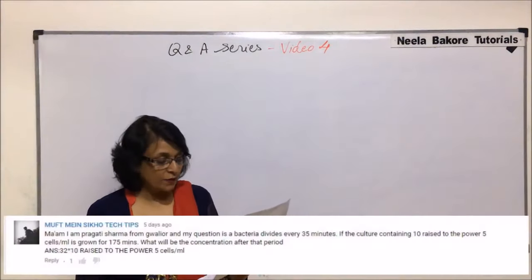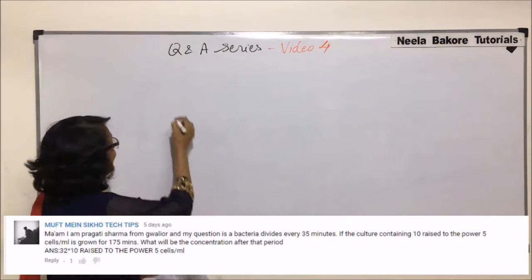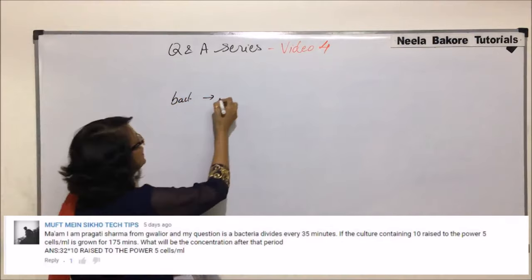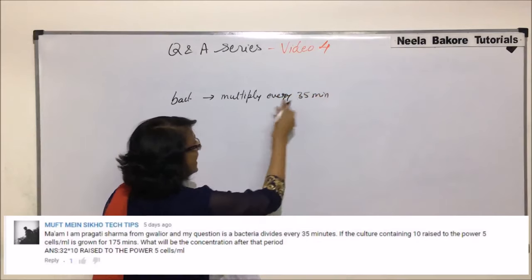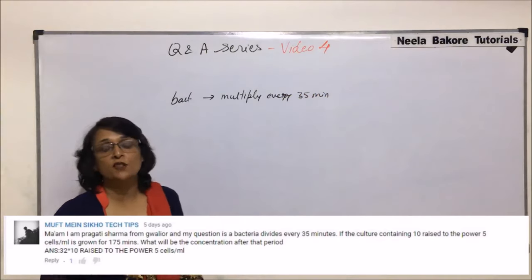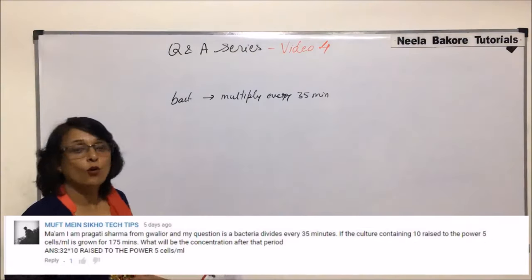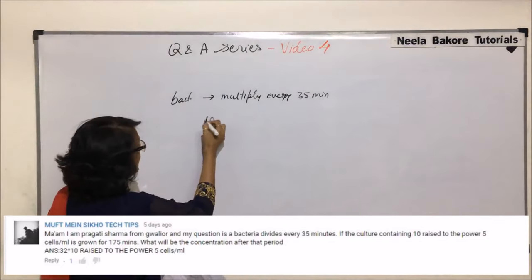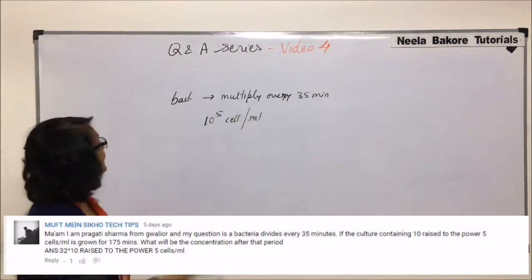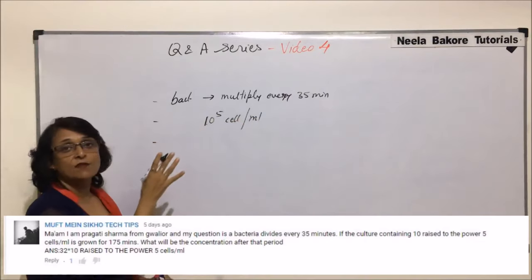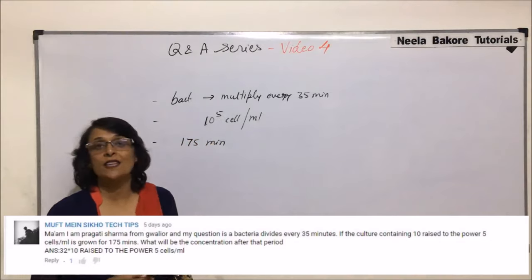Pragati Sharma from Gwalior gave a question with specific data: bacteria multiply every 35 minutes (the general division time is 20 minutes). The original culture has 10⁵ cells per milliliter. If these bacteria are allowed to multiply for 175 minutes, what will be the number of cells?